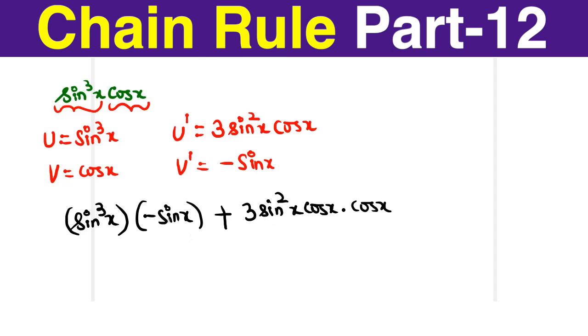Let us arrange this nicely. I usually keep the negative terms at the end. So 3 sin square x cos square x minus sin power 4 x.